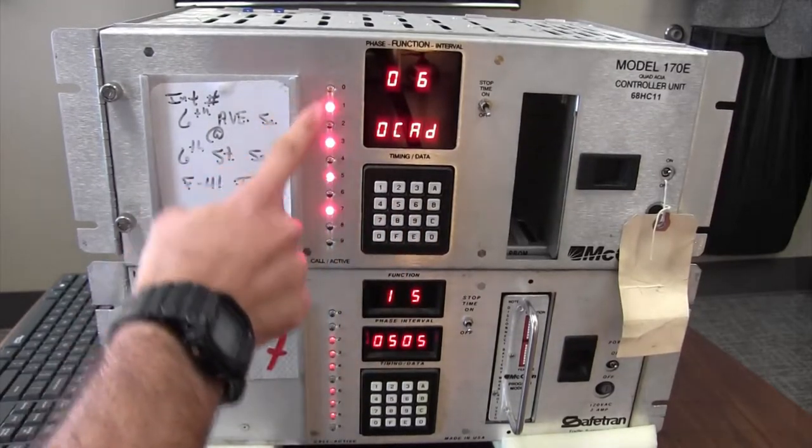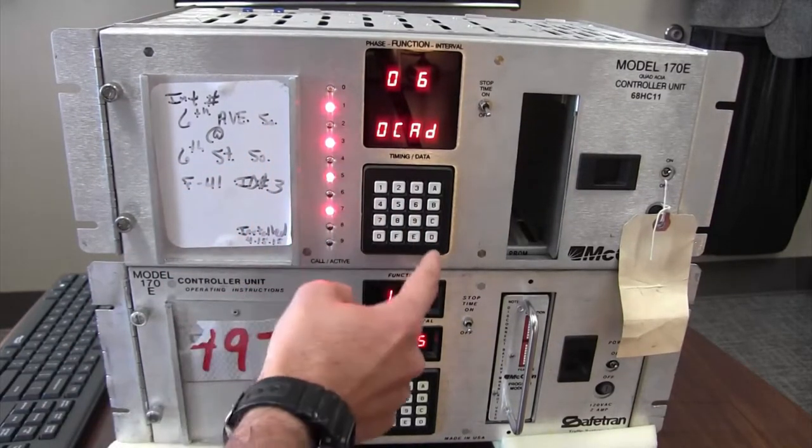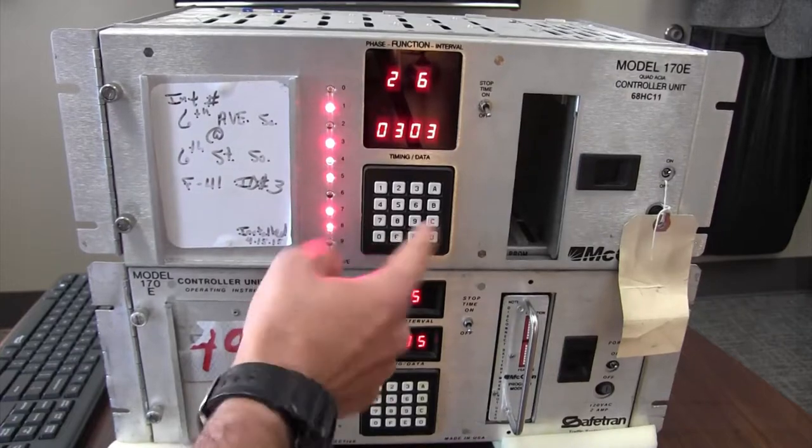So if I come to 06, my lead phases are back in here. So I can do FFF. And my recall should be off.